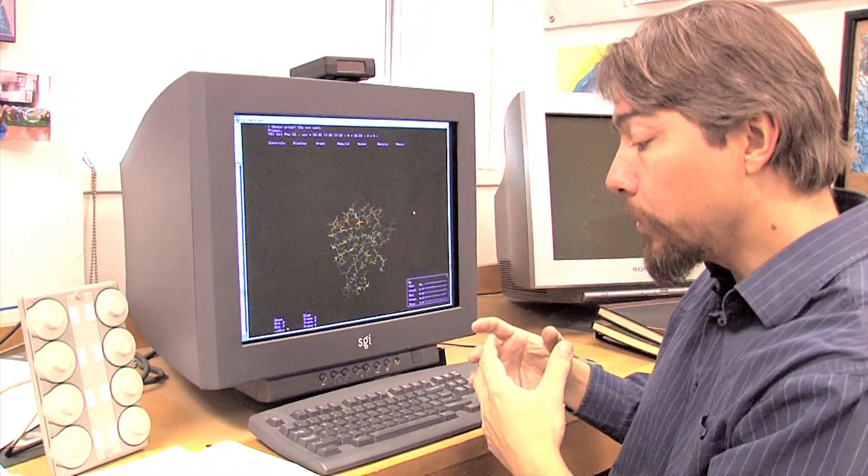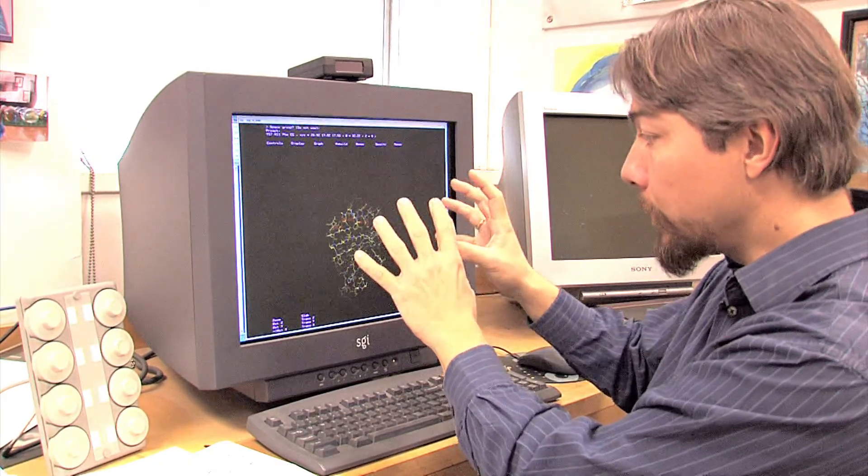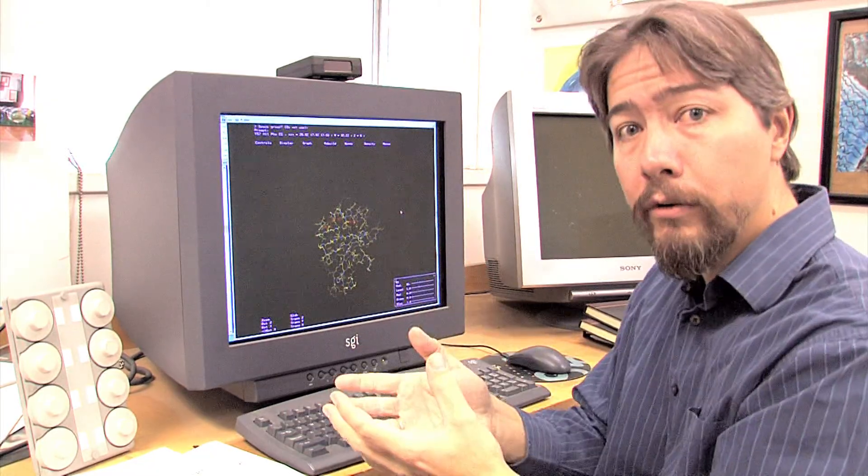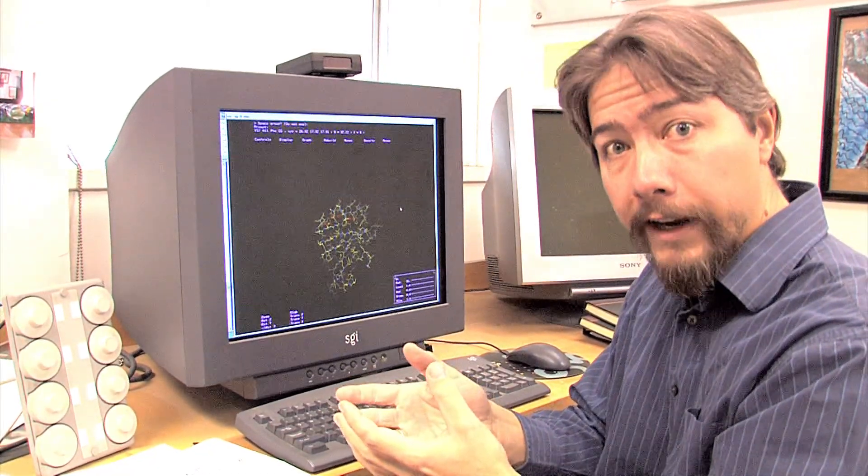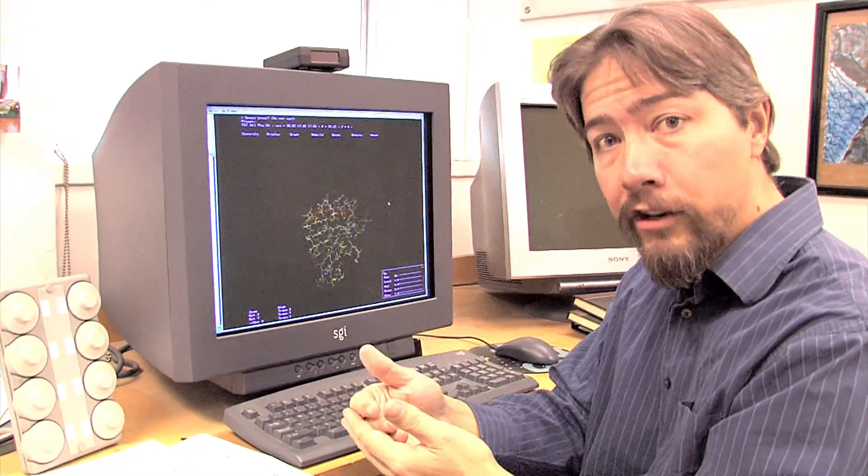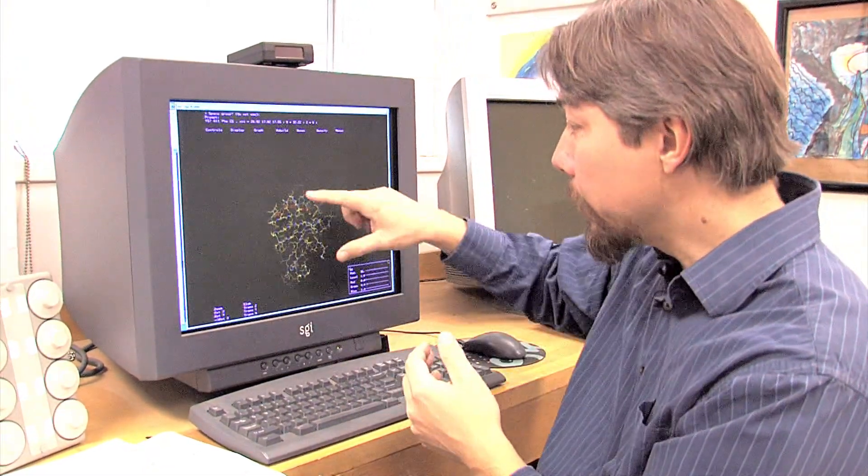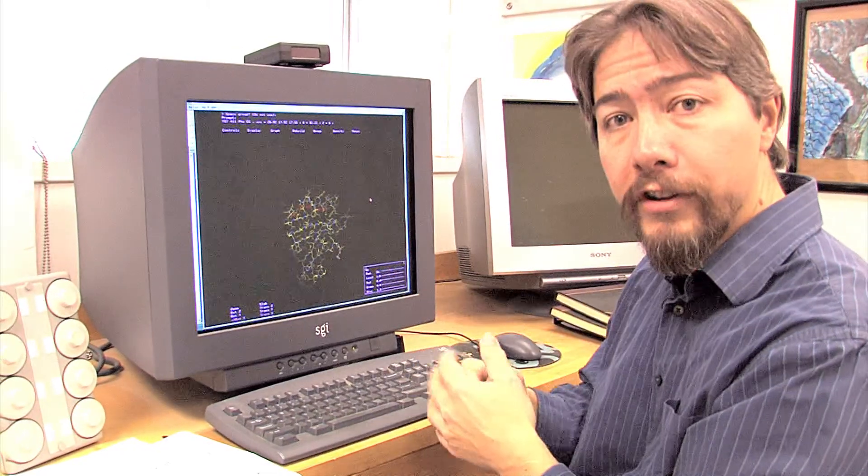And so that is where we then connect the molecular structure of the bacterial toxins to what they're actually doing in the cells that they infect. We can understand how they change ourselves, the exact biochemistry that they're doing, by knowing how these machines are put together.